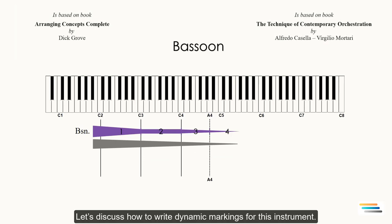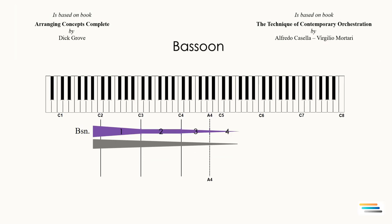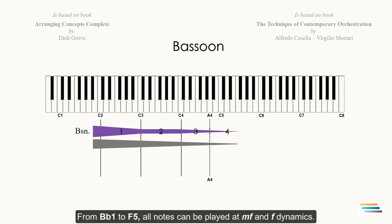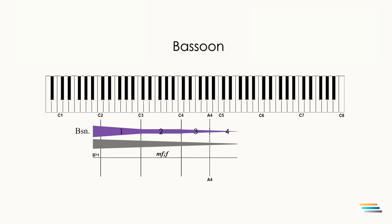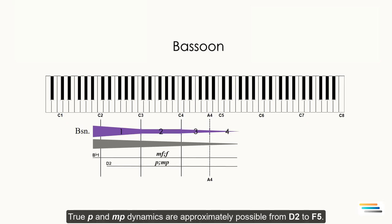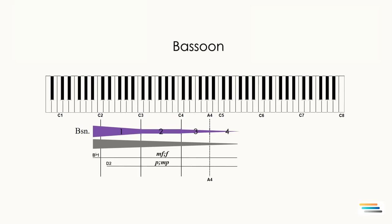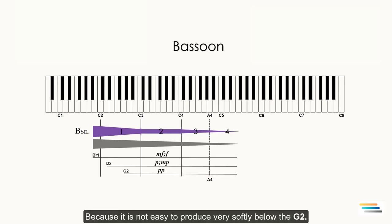Let's discuss how to write dynamic markings for this instrument. From B♭1 to F5 all notes can be played at mezzo forte and forte dynamics. True piano and mezzo piano dynamics are approximately possible from D2 to F5. True pianissimo is possible from G2 to F5, because it is not easy to produce very softly below the G2.